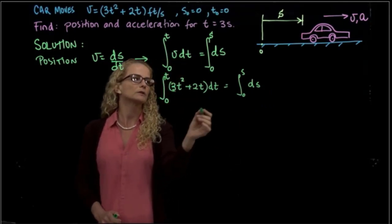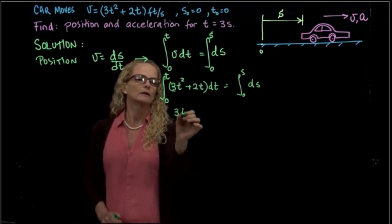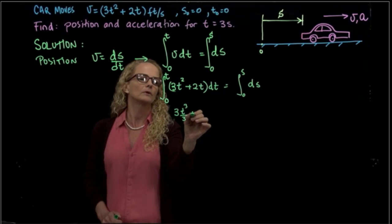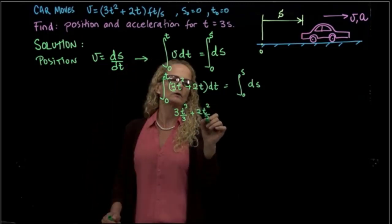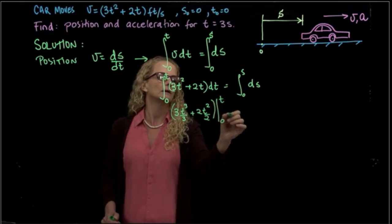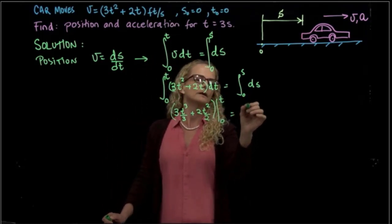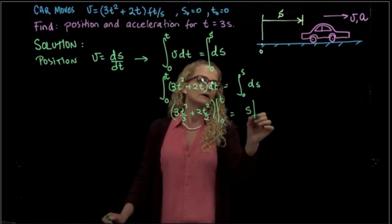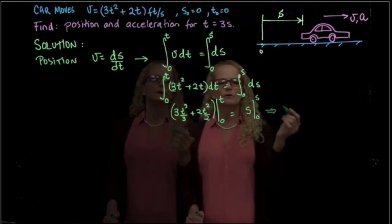If I integrate this expression, I get t cubed over 3 plus 2t squared over 2. And this expression evaluated between 0 and t. And in this case, will be s evaluated at 0 and s.